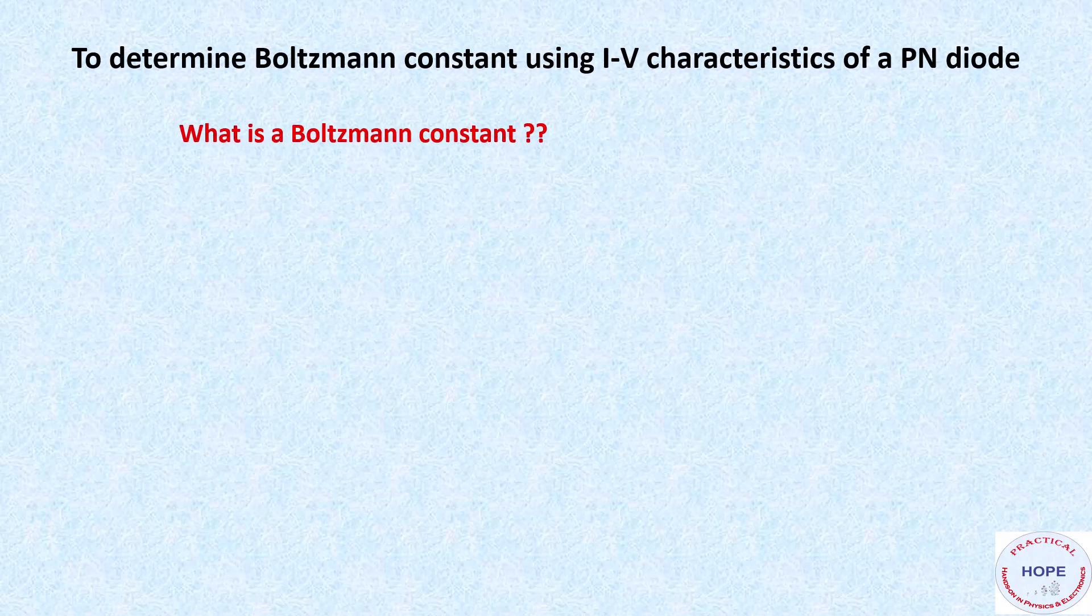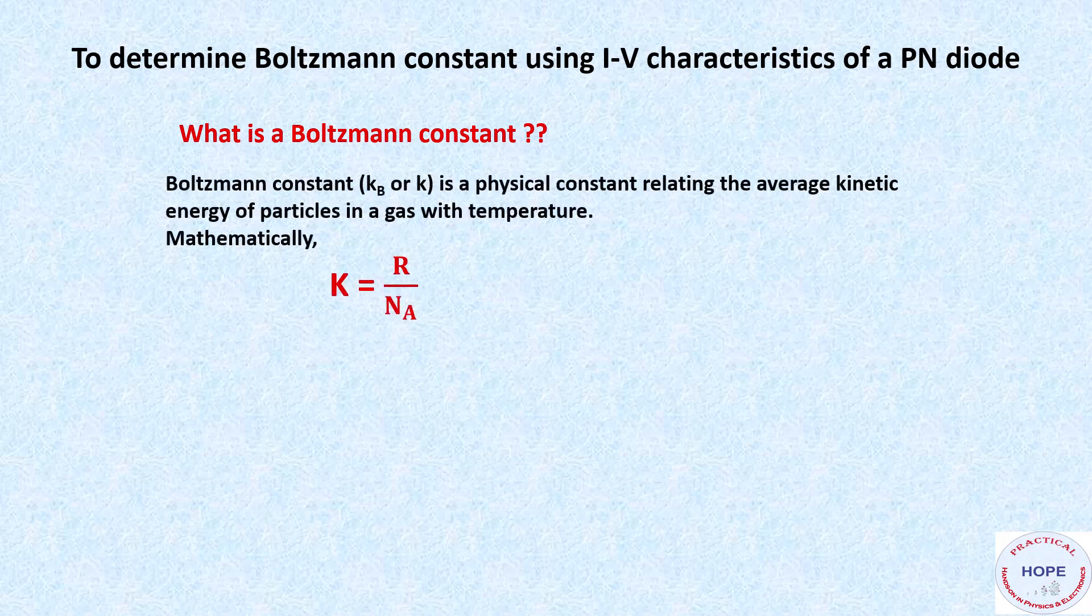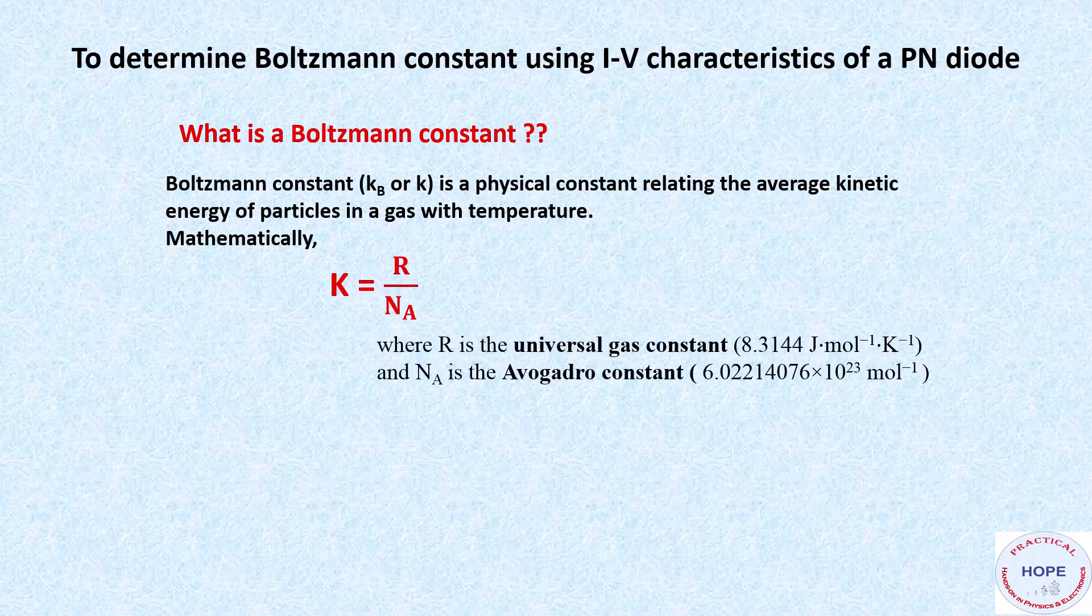First, what is the Boltzmann constant? It is a physical constant relating the average kinetic energy of particles in a gas with temperature, equals to the ratio of R by Na, where R is the universal gas constant and Na is the Avogadro constant. The values are written over here. So if you put the values of R and Na in this expression, K comes out to be 1.38 into 10 raised to the power minus 23 Joules per Kelvin.